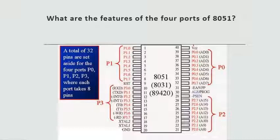Each port has eight pins. Thus, four ports jointly comprise 32 pins. All ports are bi-directional and they are constructed with a D-type output latch. They have output drivers and input buffers. We can modify their functions using software and hardware connected to them. All the ports are configured as input ports on reset. To configure a port as an input port, one must be written to the port. To configure it as an output port, zero must be written to it.